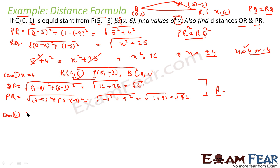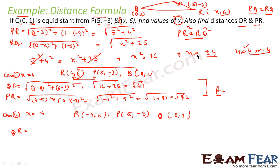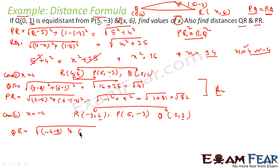In Case 2, x = -4, so R is (-4,6). P remains (5,-3) and Q remains (0,1). QR equals root of (-4-0)² + (6-1)², which is root of 16 + 25, giving root of 41. So QR = √41 again in Case 2.